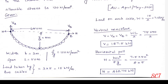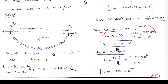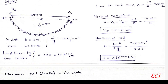That gives the vertical reactions. For a uniform section with UDL, the vertical reaction formula is VA = VB = WL/2. Substituting: V = 7.5 × 50 ÷ 2 = 187.5 kN.